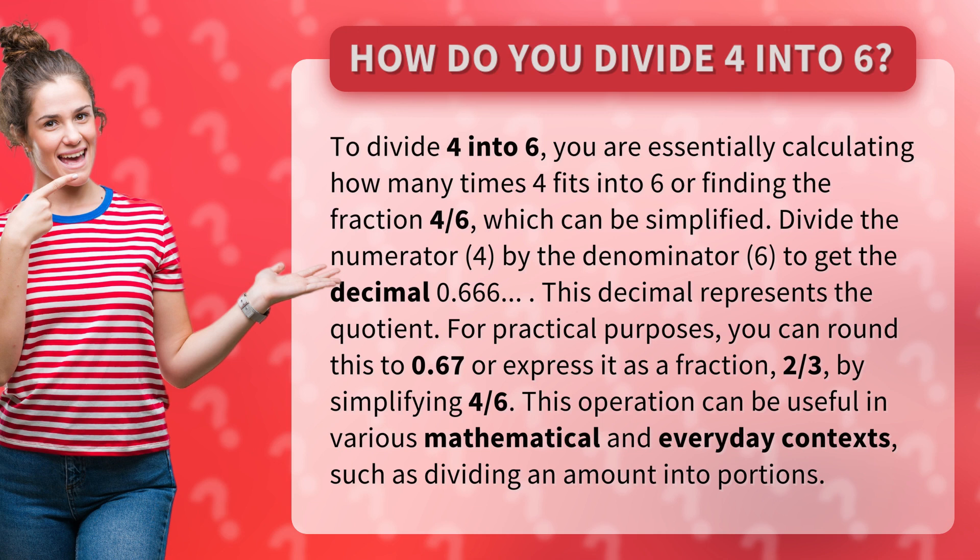Divide the numerator, 4, by the denominator, 6, to get the decimal 0.666. This decimal represents the quotient. For practical purposes, you can round this to 0.67 or express it as a fraction, 2 thirds, by simplifying 4 sixths.